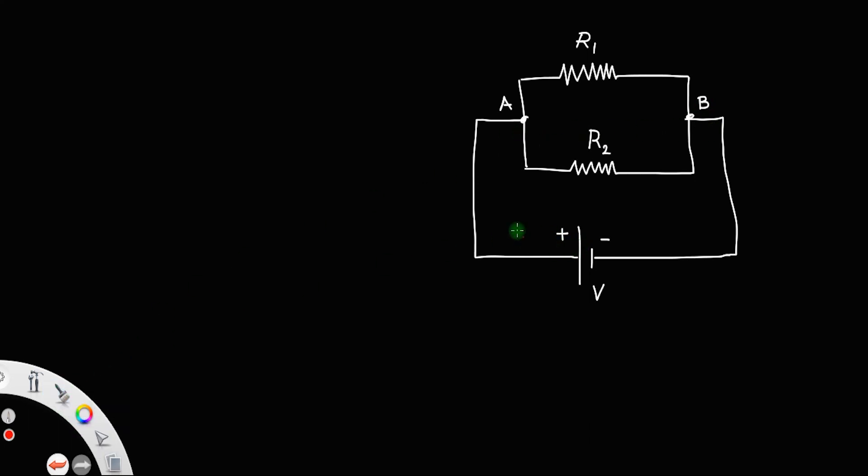The current flows from the positive terminal of the cell, let us say it be I, and at the junction A the current splits. One current flows through the resistance R1 and another current flows through the resistance R2, that is this I divides to I1 and I2. Again these two currents meet at the junction B and it will flow as I itself.